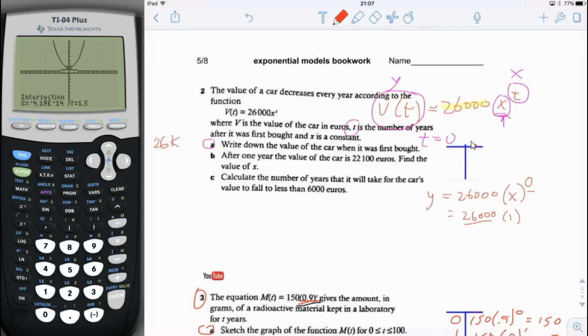After one year, the value of the car is 22,100 euros. Find the value of x. So let's rewrite the function again. y equals 26,000 x to the t. Now, after one year, so what's the time after one year? The time is 1.